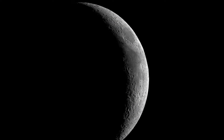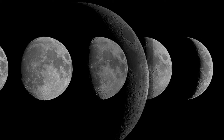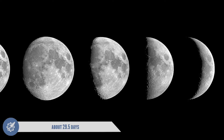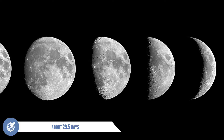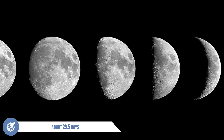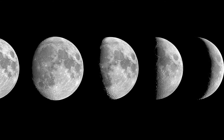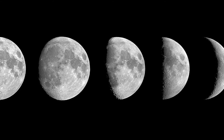Each month our moon passes through 8 phases. These phases are named after how much of the moon we can actually see, and whether the amount visible is increasing or decreasing each day. It takes our moon about 29 and a half days to complete one cycle, going through all of the 8 phases.